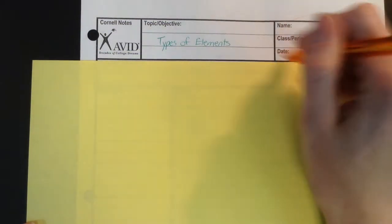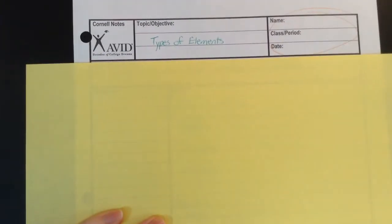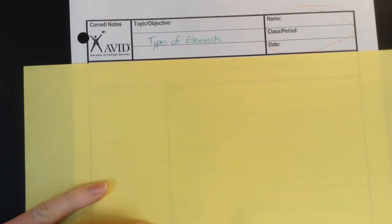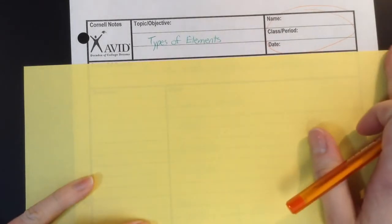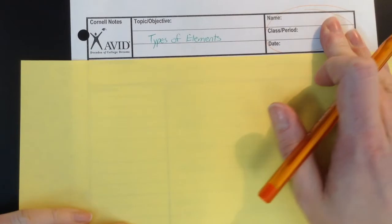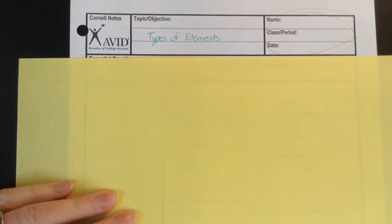So make sure you put your name, date, and class period over here, and our topic is types of elements. You did a lab where you looked at some types of elements and classified them based on their properties, and then we did a brief overview of those properties, and so now we're going to write down some definitions and understand it a little bit more fully.